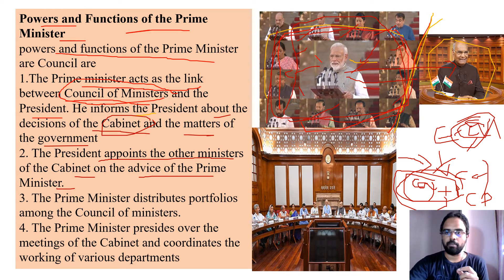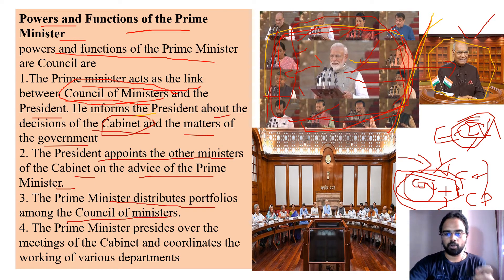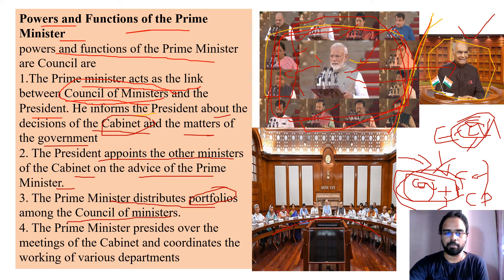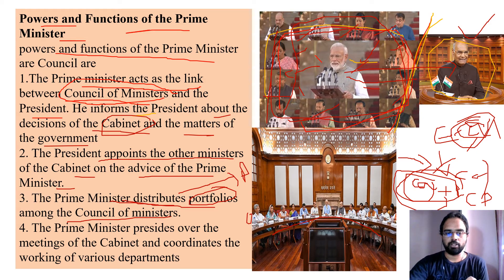The prime minister distributes portfolios among the council of ministers — deciding which ministry goes to which person. Once the prime minister gives that list to the president, the president calls all those ministers for the oath-taking ceremony. The prime minister also presides over the meetings of the cabinet and coordinates the working of various departments.